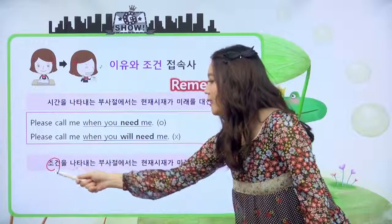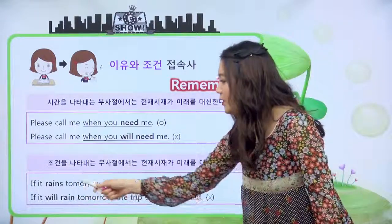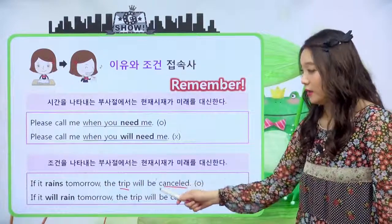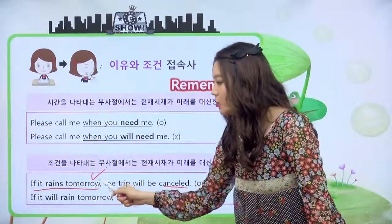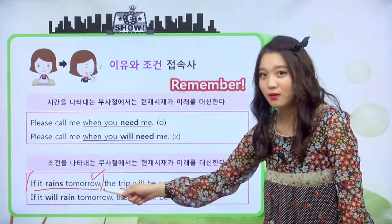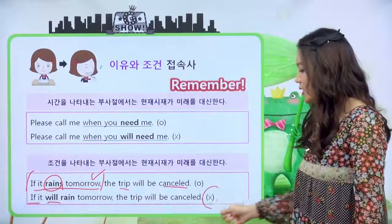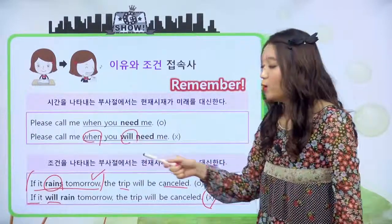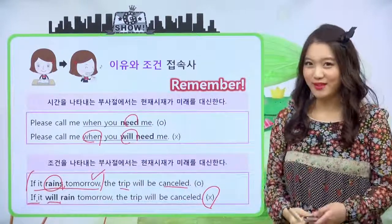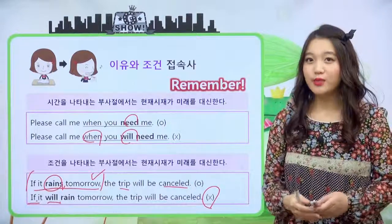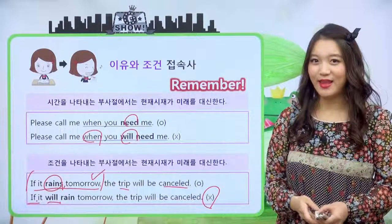모아 모두 when도 will과 사용되지 않고, if도 will과 함께 사용되지 않아요. 그 대신 현재 시제 동사가 온다. 이렇게 기억해 주시면 될 것 같아요. 오늘 정말 어려운 내용들을 같이 함께 했는데 이 접속사는 영어에서 뗄래야 뗄 수 없는 아이예요. 그렇기 때문에 꼭 복습하는 거 잊지 마시고요. 우리는 다음 시간에 다시 만나요. I'll see you next time. Bye bye.